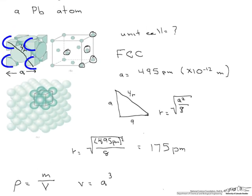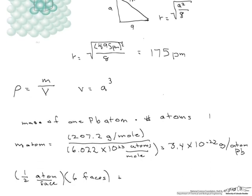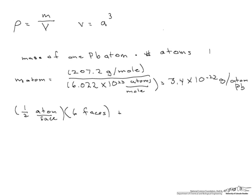Now let's go back and take a look at the corners. And at each one of these corners, we have 1 eighth of an atom, and we have 8 corners. So we have to add to this 1 eighth of an atom per corner, and we multiply that by 8 corners. And so what we're left with is 4 atoms in our unit cell.